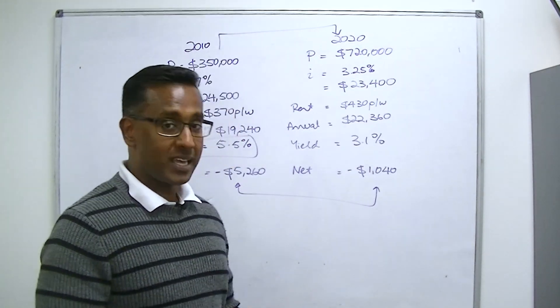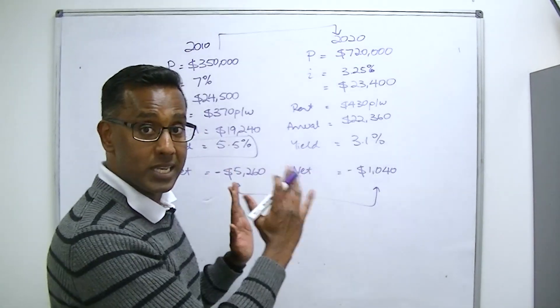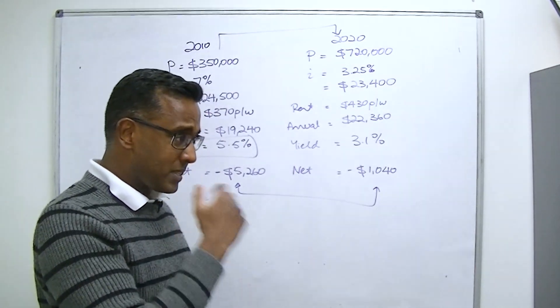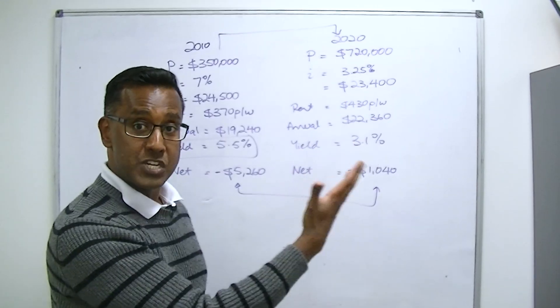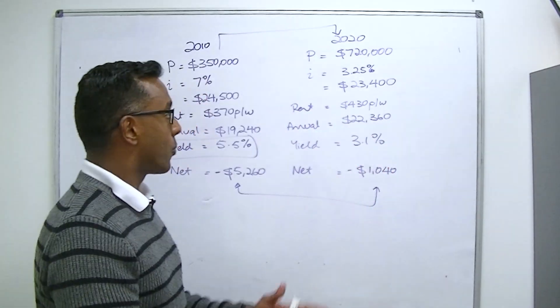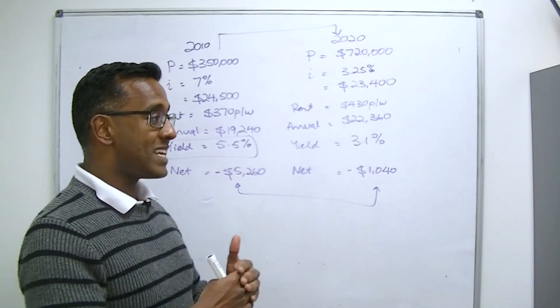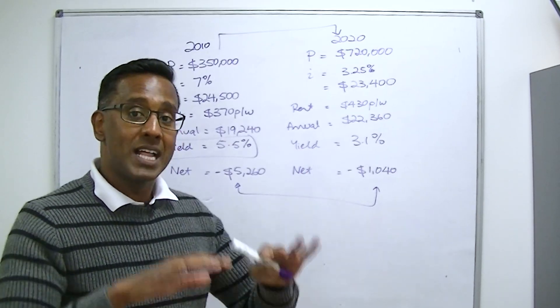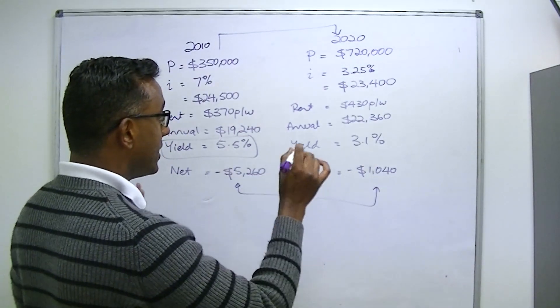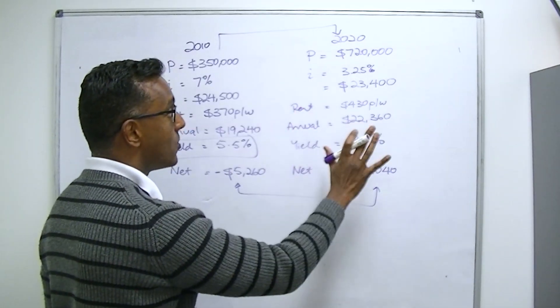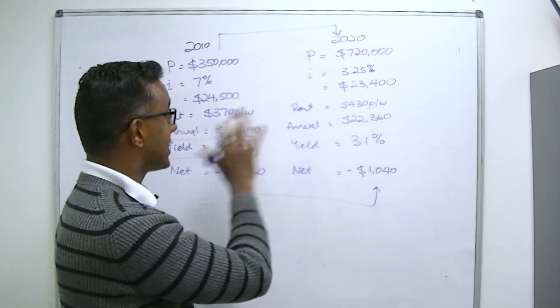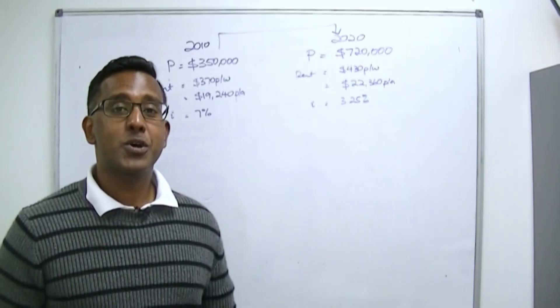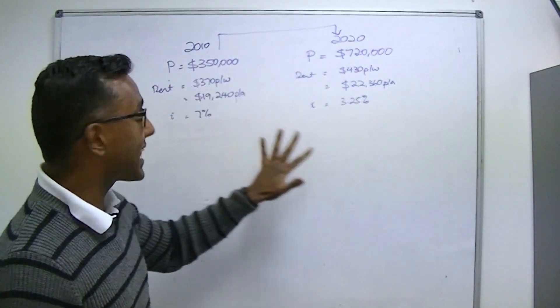However, rents, we all know, have not kept up with capital growth in our bigger cities. So the rent today on this particular property that he's currently getting is $430 per week. It's increased maybe about less than 20% despite the fact that property has increased over 100% in value. The annual rent then works out to be, again assuming zero vacancy and we're not talking about any of the additional costs like property management commissions and rates and maintenance, exactly what we did over here, the annual gross rent would be $22,360.